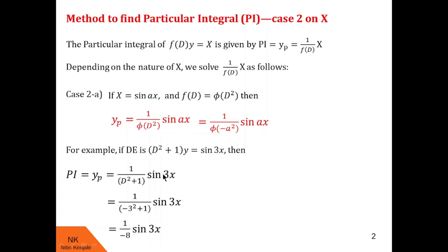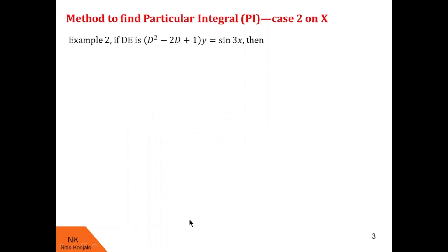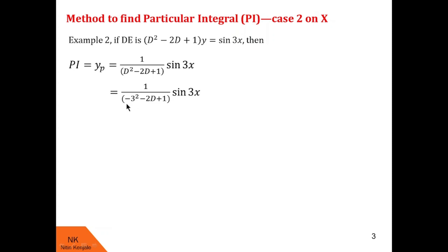In that example, after substituting d² = -a², all the d's in the expression vanish. But it may happen that in some cases after substituting for d² some d's will remain. Like here, where a is 3, to solve 1/(d² - 2d + 1) of sin 3x, we replace d² by minus a², that is minus 9, so minus 9 plus 1 is minus 8, and the minus 2d term will remain as it is.